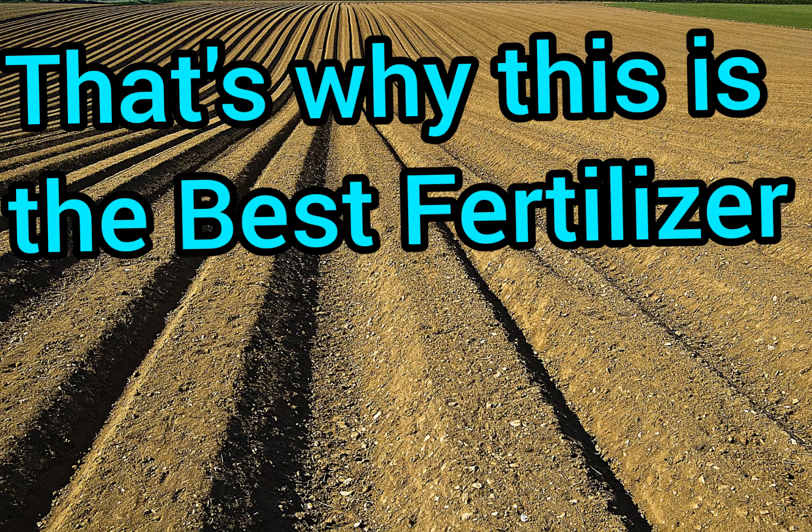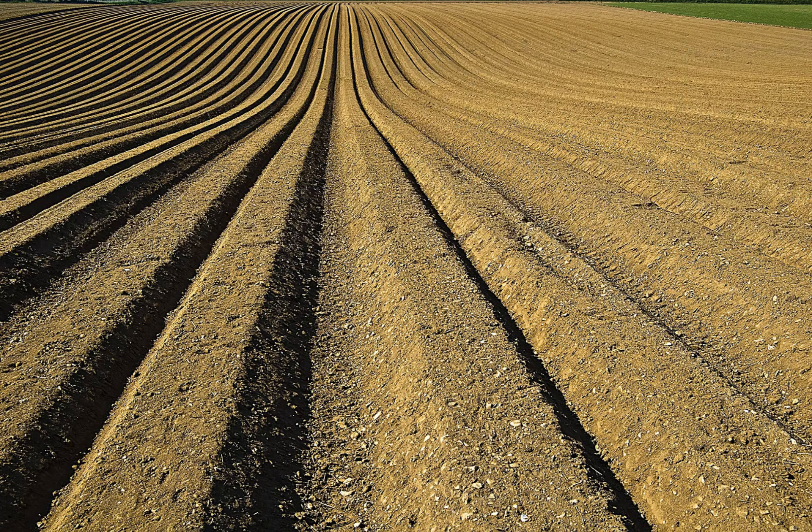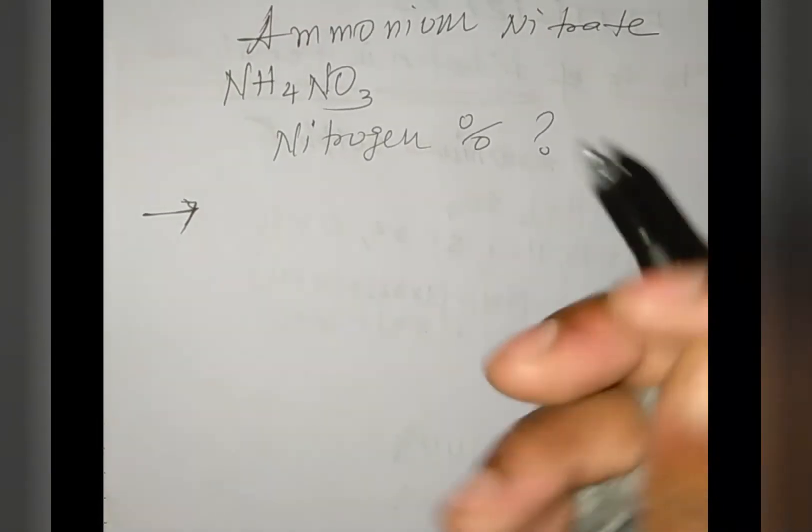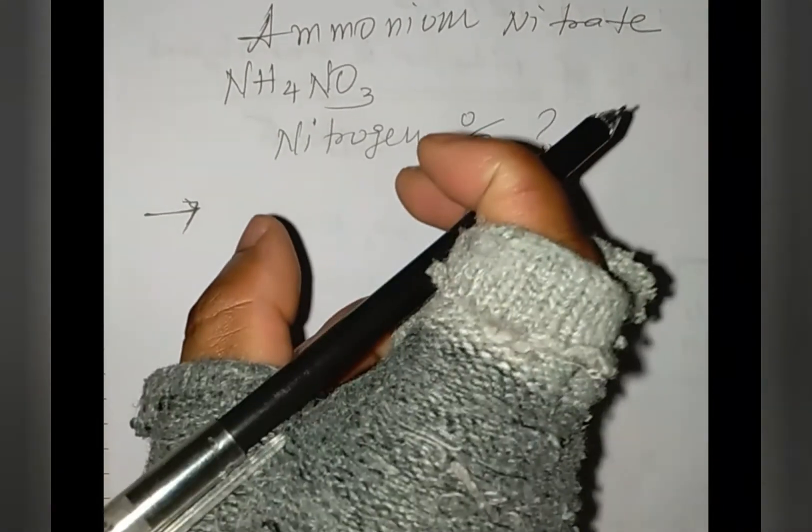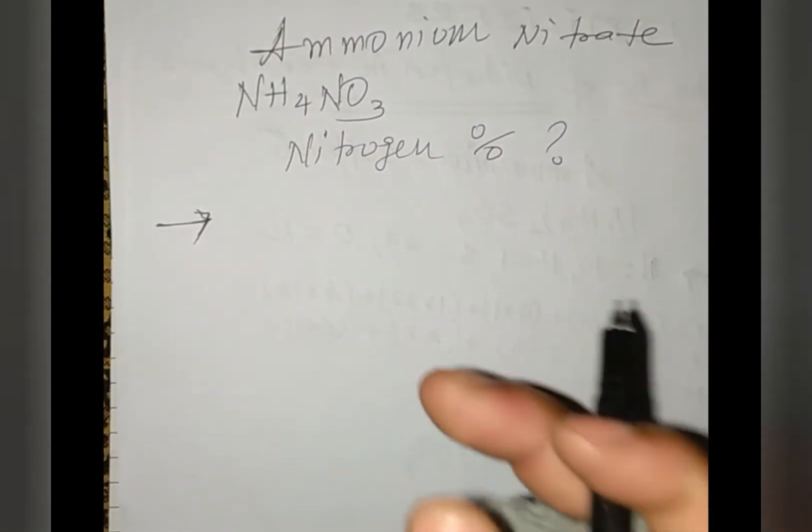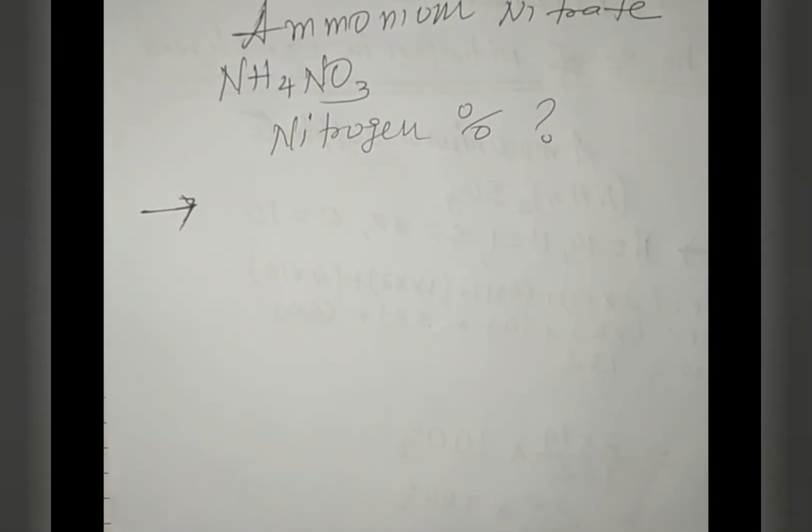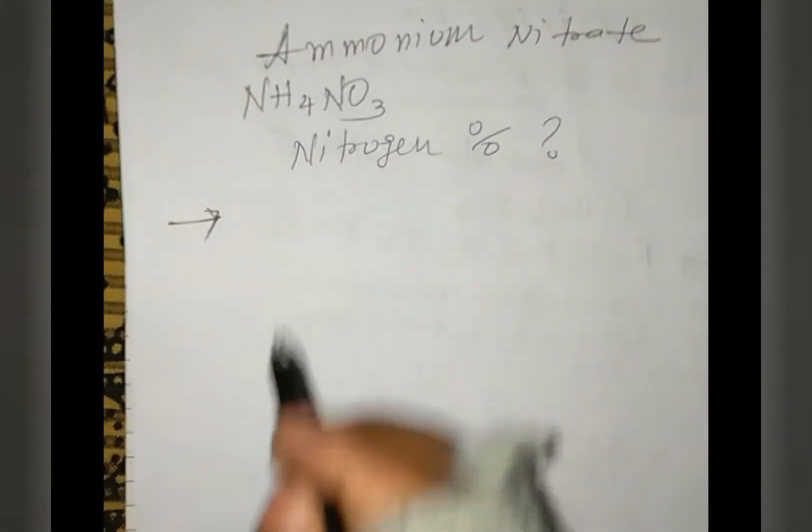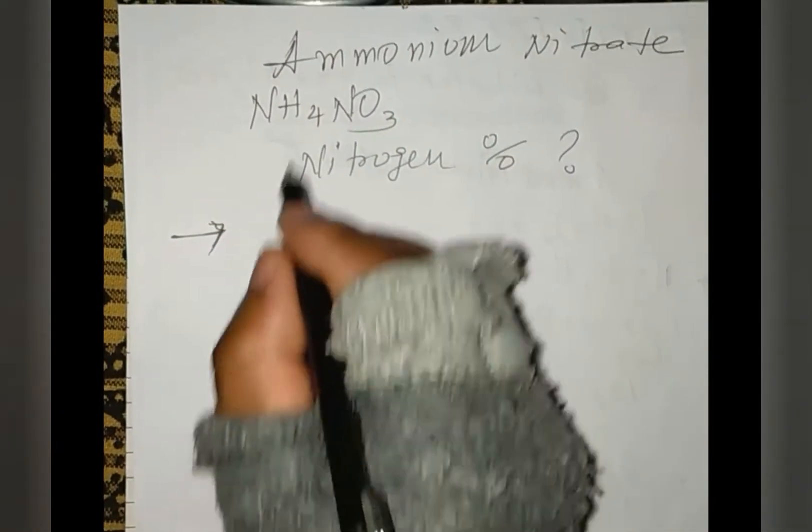This is a continuation on how to find the percentage of nitrogen in fertilizer. Ammonium nitrate is the best fertilizer. What we do here is basically the same concept we did in the previous example. So how to find the percentage of nitrogen in ammonium nitrate?